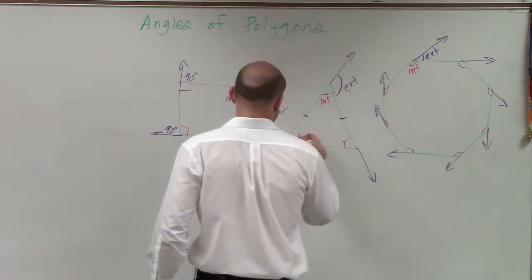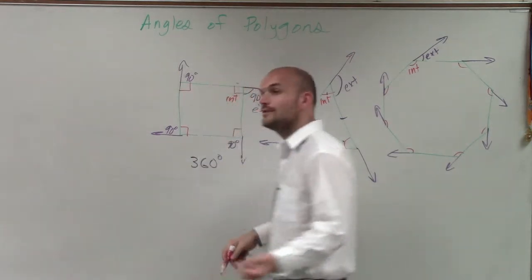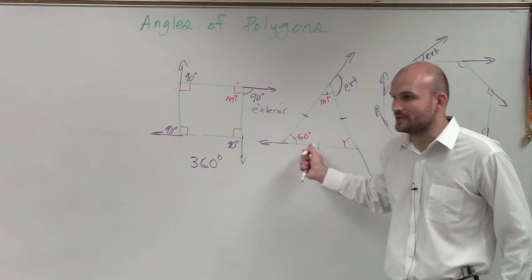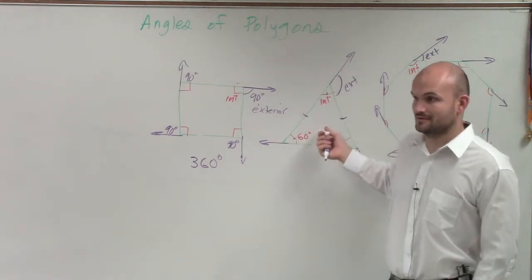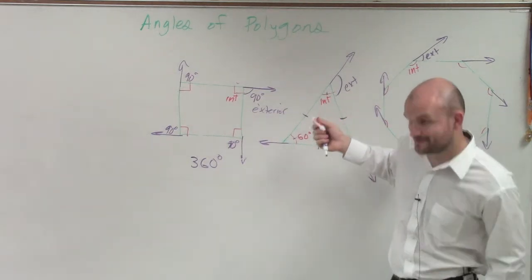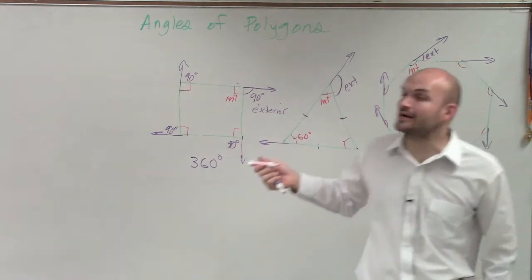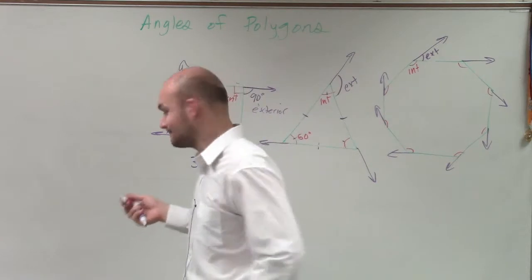Now, why do you know it's 120? Right. And why do you know these two angles have to add up to 180? Because they are? They're supplementary. Why do you know they're supplementary? Make up a straight line, and they are a linear pair. Very good.